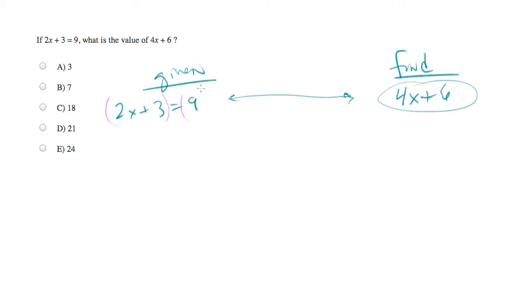What I'm going to do is multiply both sides of this equation by 2. And what we're going to end up with is 4x plus 6 equals 18. Note the match between what we've got and what we've been asked to find. And you can see that the answer is 18, which is C.